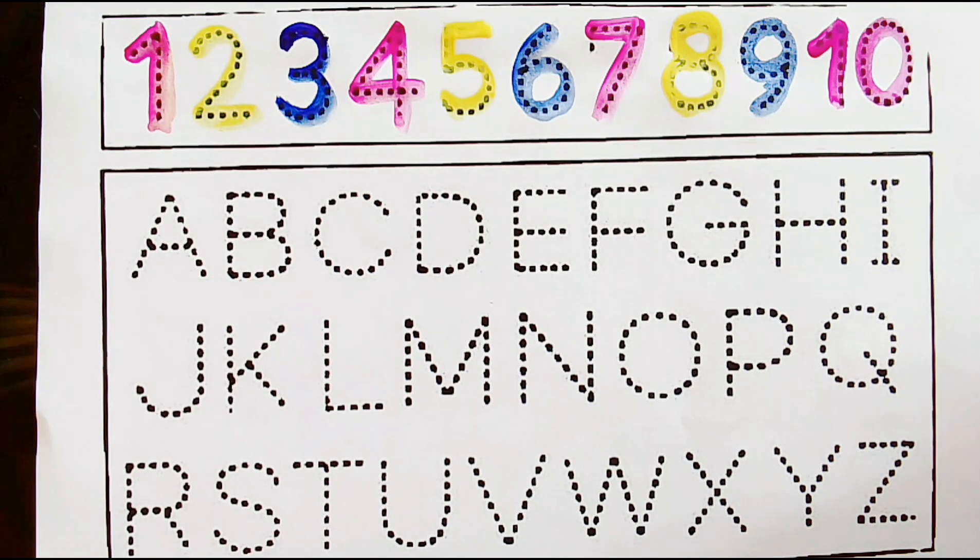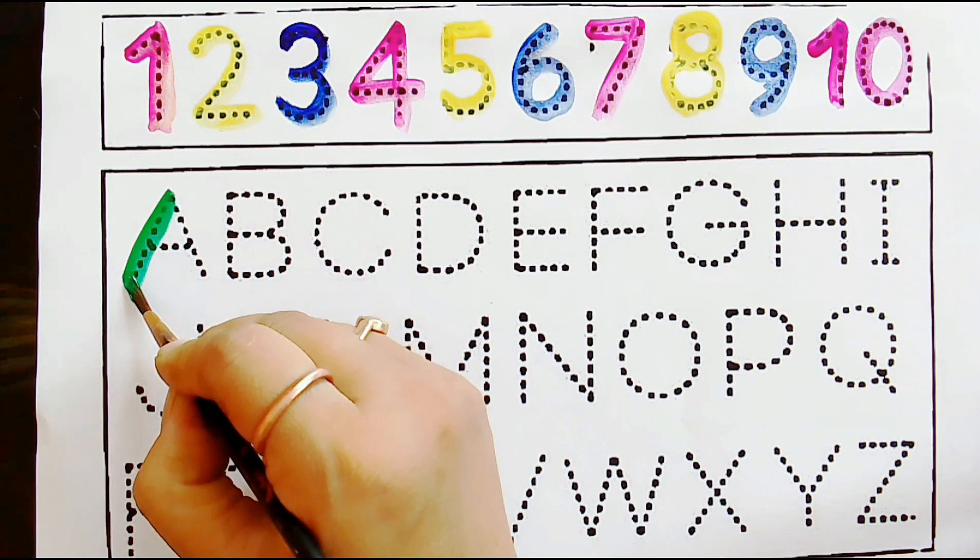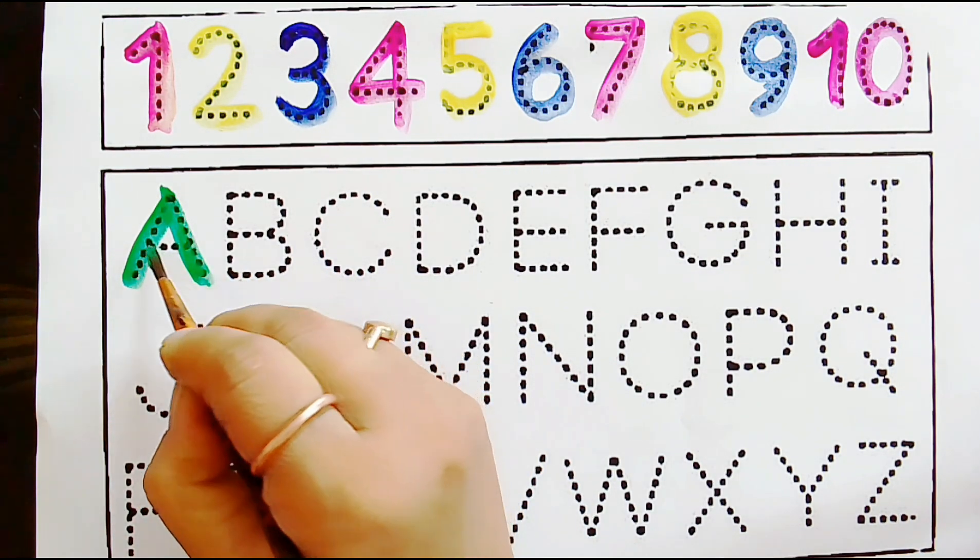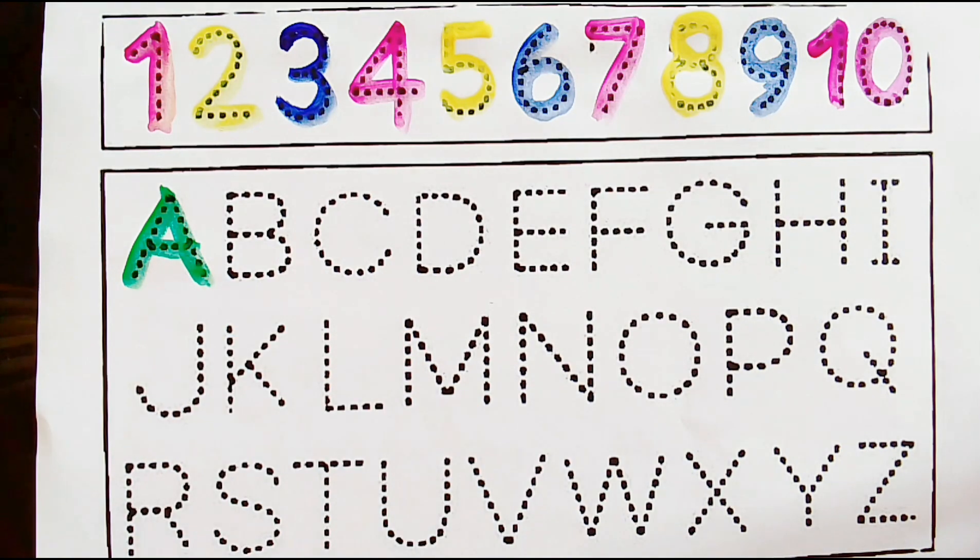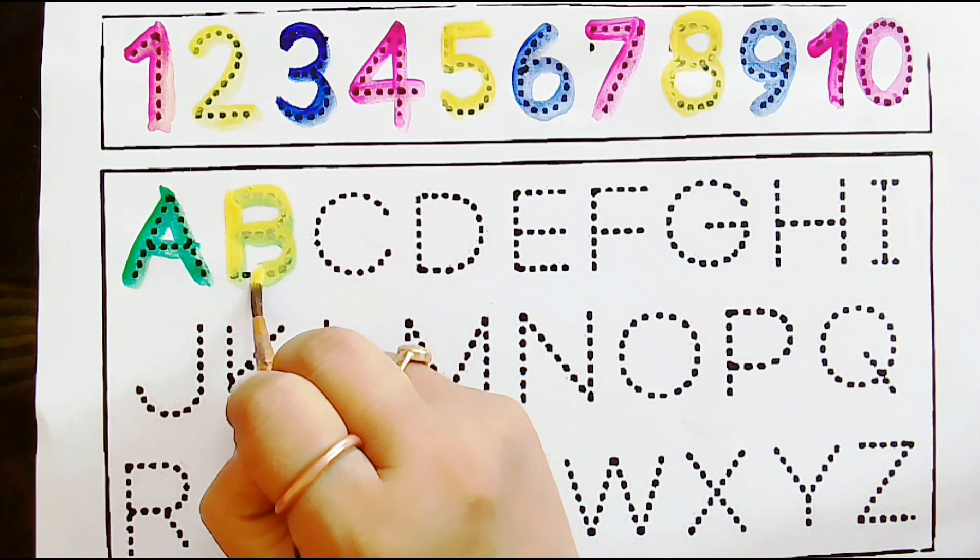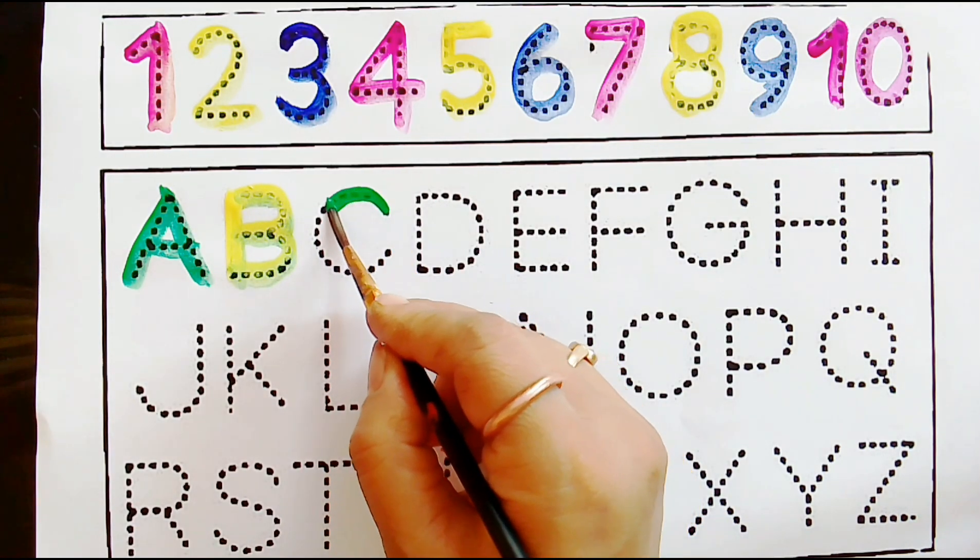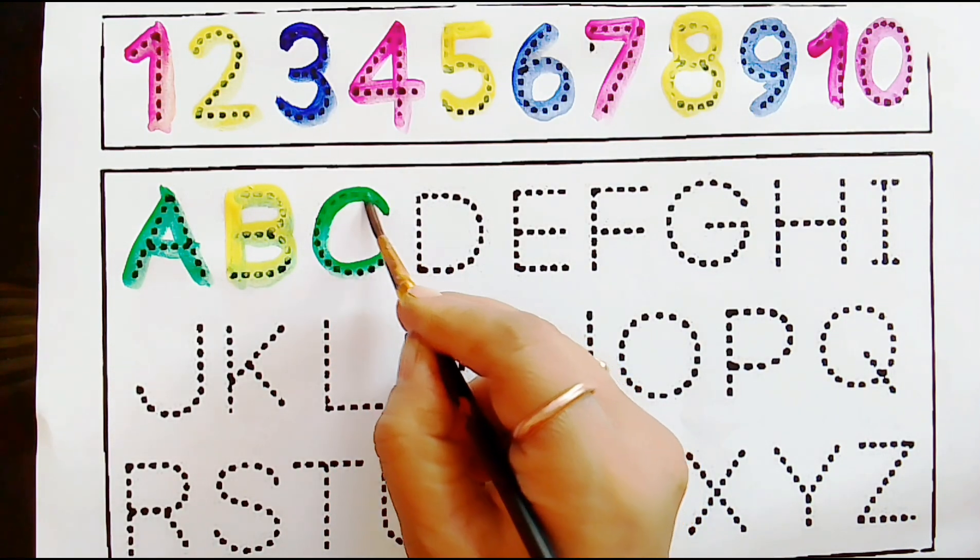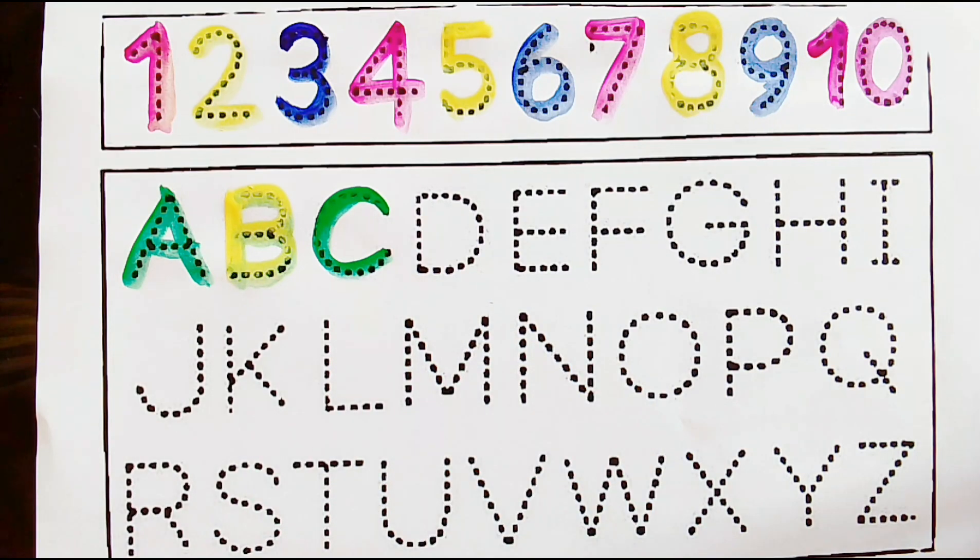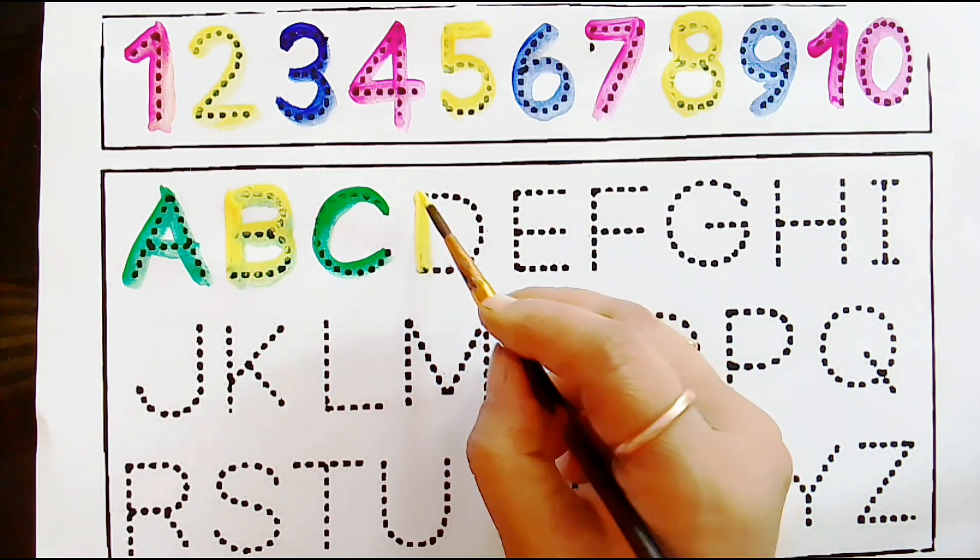Alphabets, alphabets. A, A, A for Ant. B, B, B for Bear. B. C, C, C for Candy. Go on. D, D for Dog.